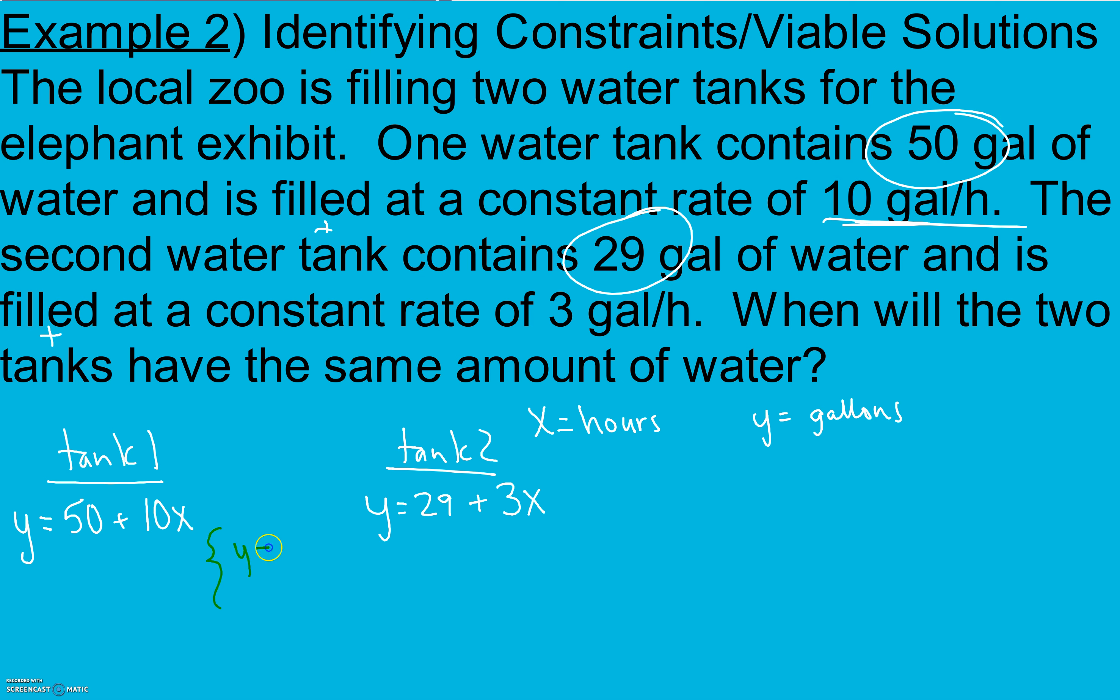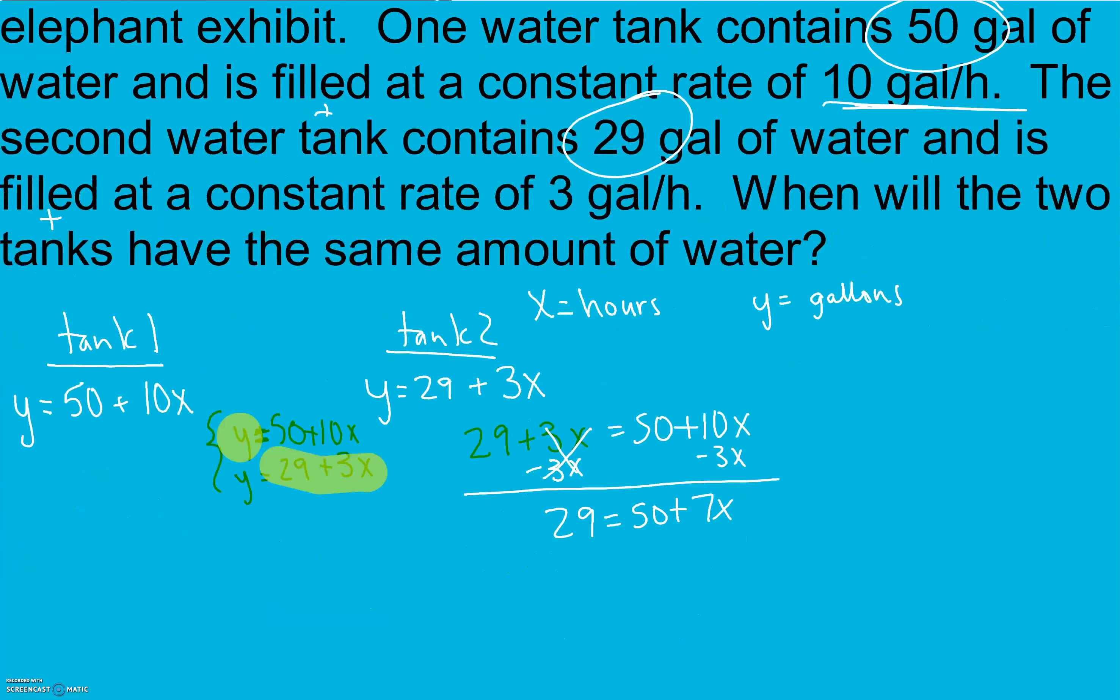So I can put these together. Y equals 50 plus 10X. And Y equals 29 plus 3X. Now, I know what Y equals. Y equals 29 plus 3X. So I can substitute that into my equation and solve. Again, the rest of my equation stays exactly the same. We want to get all of our variables together on one side. So I'm going to move my variables from the left side. Completely move them by picking them up and doing the opposite. So subtract 3X. Now, since all my variables are on the left, I need to get rid of the 50 to get all my number parts, constants, on the other side. And to get X by itself, we're going to divide. And I get X equals negative 3 hours.